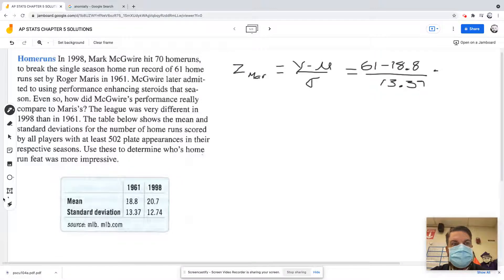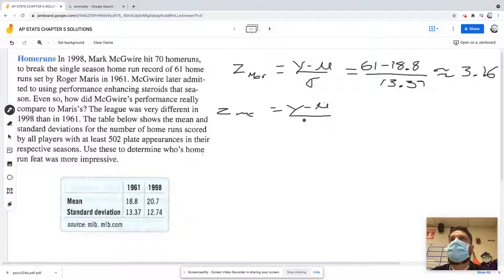So now if we do the z-score for McGwire, what we're doing is we're standardizing the z-scores, we're standardizing the data sets. Because really truthfully the numbers don't matter, we're really looking at the spread. And so the z-score tells us, and I'll draw a picture of this in a second...